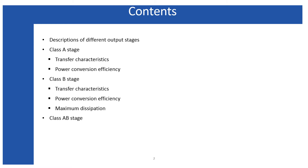Thereafter I will discuss Class AB, because in order to overcome the limitations of the Class B amplifier we need the Class AB amplifier. Class B is much more power efficient than Class A, but we cannot use Class B directly due to certain limitations. To overcome those limitations we use the Class AB amplifier, and that will be discussed in this lecture.